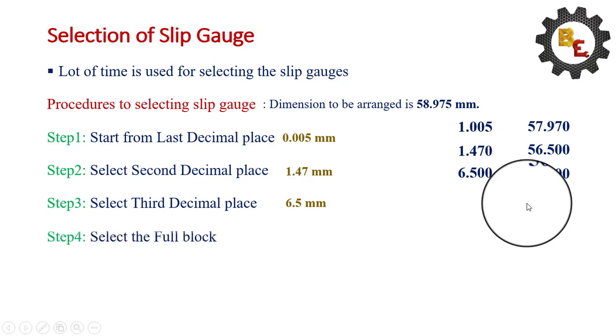The last step is select the full block of 50 mm. Now, this 50 mm. So, the total value is 58.975 mm. This way, we have to select the slip gauge.